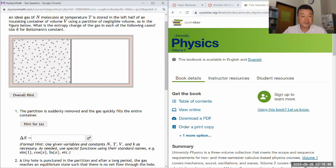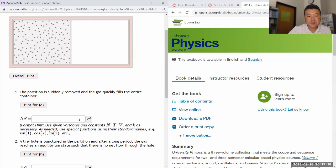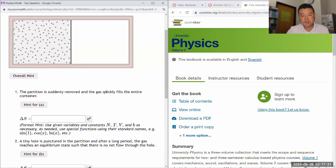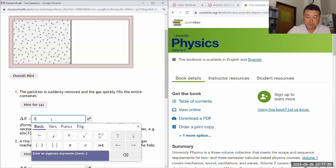So this question says, an ideal gas of some number of molecules at some temperature is stored to the left half of an insulating container using a partition-legal valve. What is the entropy change in each of the following cases? Use K for Boltzmann's constant. Let's look at each one, and if I figure that there's a formula that could be useful, but I don't remember, I'll use the hint to see if there's a link to the formulas. So it says, the partition is suddenly removed, and the gas quickly fills the entire container. Here, if you're thinking zero, that's wrong.